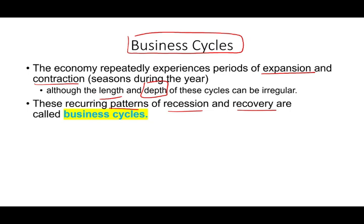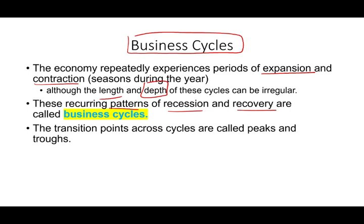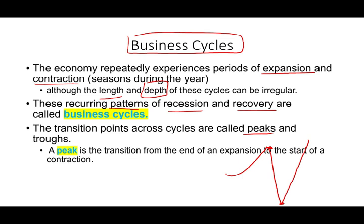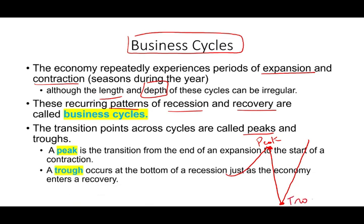Now we have transition points within business cycles called peaks and troughs. A peak is at the top and a trough is at the bottom. A peak is the transition from the end of an expansion to the start of a contraction — you reach the max and start to go down. Then you go all the way down to the trough, which occurs at the bottom of a recession just as the economy enters a recovery.